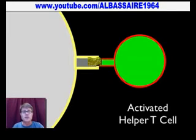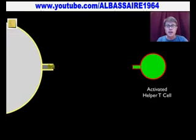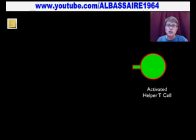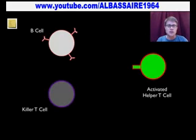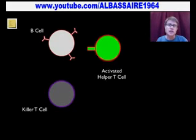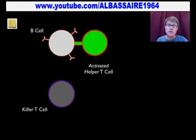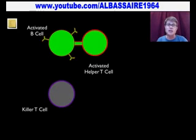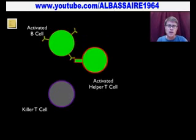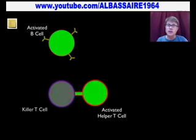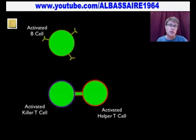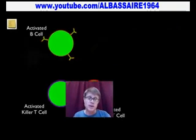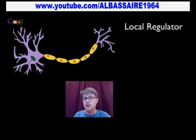Now the helper T cell is activated — it knows the shape of that antigen. So the macrophage isn't required anymore; it's going to go eat more of those antigens. The helper T cell can send that message to a B cell, so it can make plasma cells that make more antibodies and also make more memory cells. It's also going to activate a killer T cell, which now knows that shape and will target any cell inside our body that's actually infected with that antigen. By passing that message off, just like a post-it note, we're sure of what that shape is.